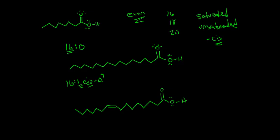We can also name this using biological nomenclature, where we start numbering from the omega-terminus — the very last carbon. Counting from the omega end, this double bond is on the seventh carbon, so we name it 16:1 n-7. This means 16 carbons, one double bond on the seventh carbon from the omega end. In biological systems, these double bonds are absolutely always cis.